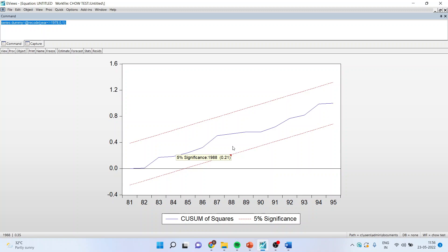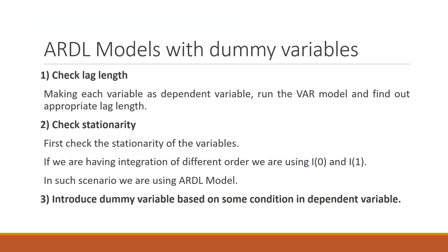Now we will have to estimate the ARDL model with EViews. Before that we will have to check the lag length, check the stationarity of the data, and make sure that the series are of I(0) or I(1). We need to satisfy this condition before running ARDL. Check the lag length by making each variable a dependent variable, run the VAR model and find the appropriate lag length. If we have integration of different orders — I(0) and I(1) — only then we use the ARDL model.